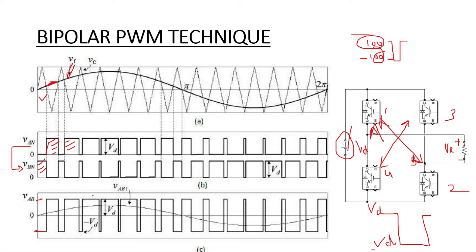In this fashion we are generating the pulse. By the area of this waveform, we can say this is our sine wave. So in this fashion, it is converting DC into the AC quantity.